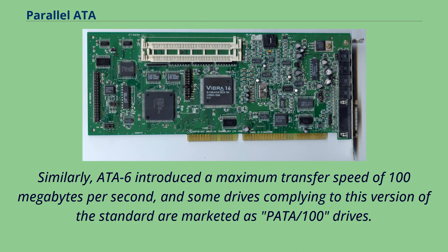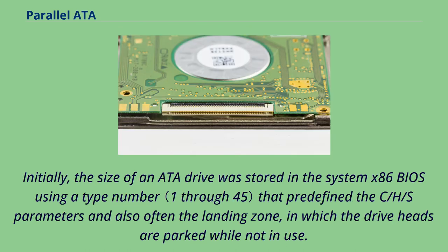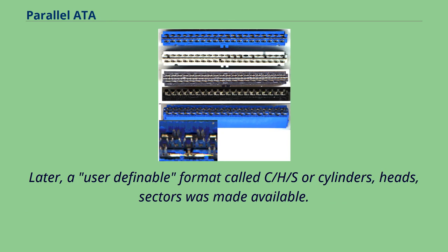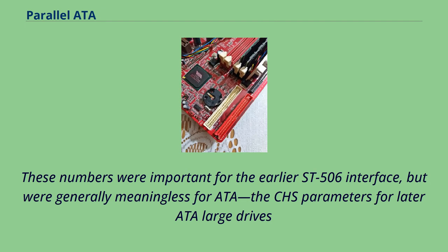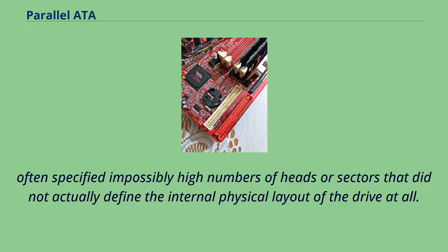Initially, the size of an ATA drive was stored in the system x86 BIOS using a type number that predefined the C/H/S parameters and also often the landing zone, in which the drive heads are parked while not in use. Later, a user-definable format called C/H/S, or cylinders, heads, sectors, was made available. These numbers were important for the earlier ST-506 interface, but were generally meaningless for ATA. The CHS parameters for later ATA large drives often specified possibly high numbers of heads or sectors that did not actually define the internal physical layout of the drive at all.